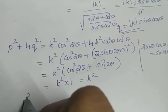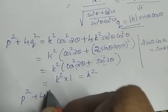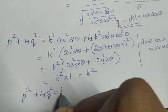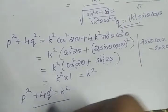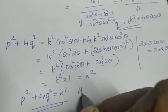Thus we have proved that P² + 4Q² = K². Hence proved.